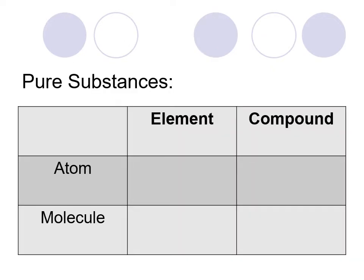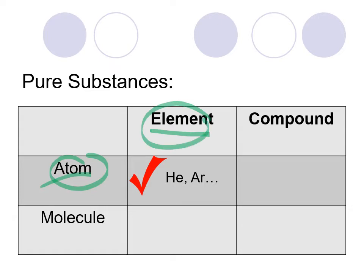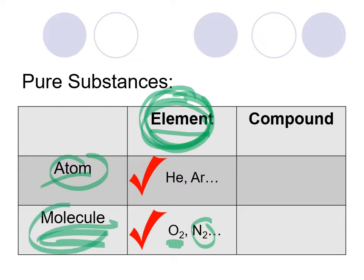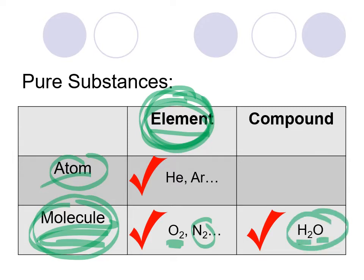We're going to be focusing on homogeneous mixtures, particularly solutions. Pure substances themselves: we can have things that are elements and they are just an atom — for example, the noble gases are atoms that are also elements. Some elements are molecules; they don't exist as single atoms but form groups of only that same atom, for example O2, N2, or S8. A compound involves molecules where you have different types of atoms grouped together, and since you have more than one type of atom it classifies as a compound.